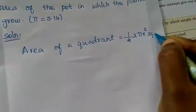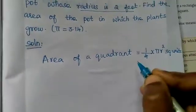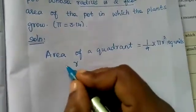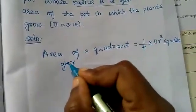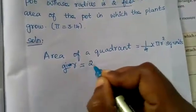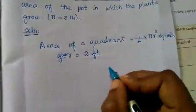Area of a quadrant equals 1 by 4 times pi r squared square units. Now what is given? Radius r equals 2 feet. Now substitute the values.